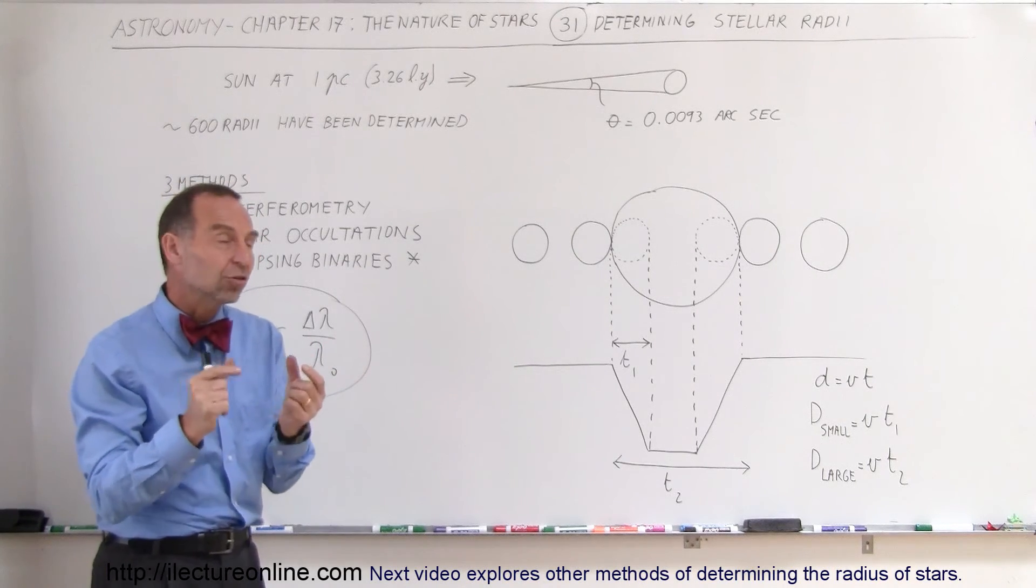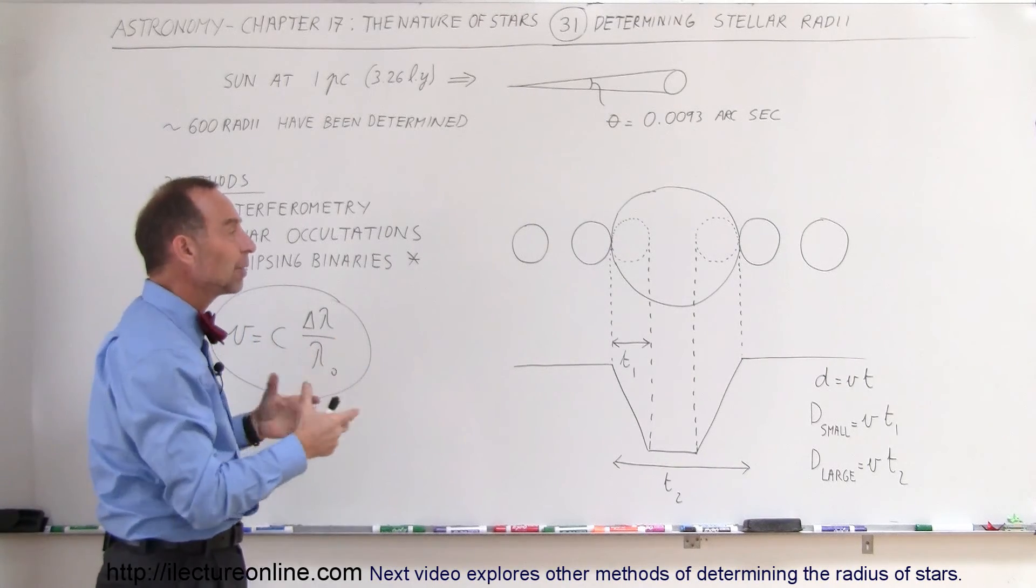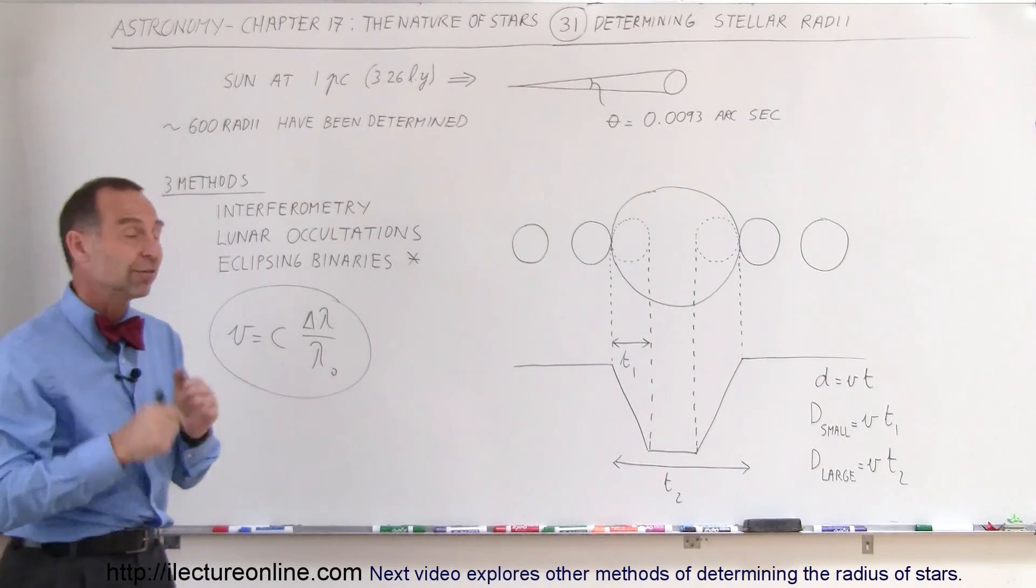Once we know the diameter of the star, we can then also figure out the luminosity and the temperature independently, and from that we can learn more about each star. But again, finding the stellar radii, the radius of a star, is a very difficult thing to do.